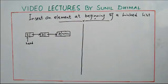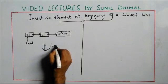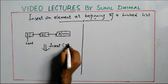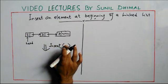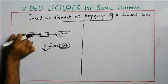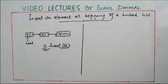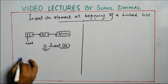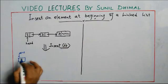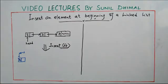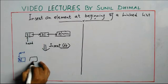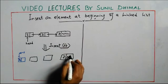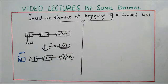Now I need to insert a new element at the beginning of the list. I want to insert element 4 at the beginning. First of all, I'll create a new node — let's call it 'new' — with the element 4. I already have the existing list: 5, 2, 7.